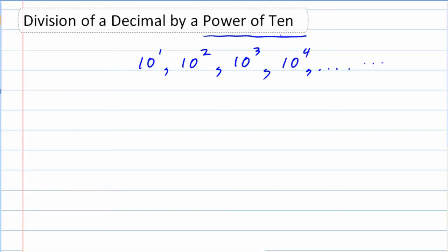So those are numbers like 10 to the first power is 10, and then 10 to the second is 100, 10 to the third is 1,000, and 10 to the fourth is 10,000.